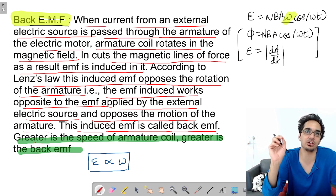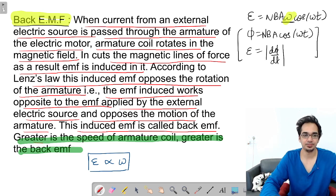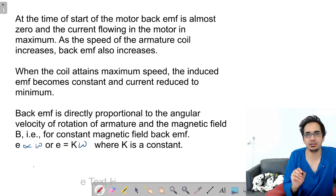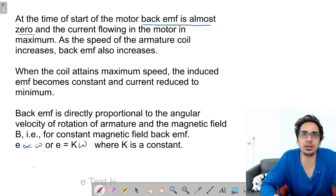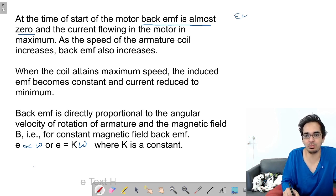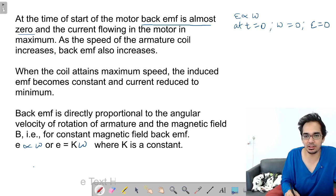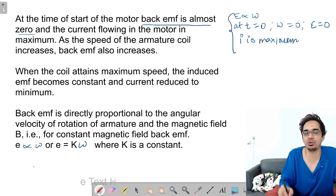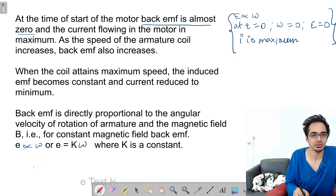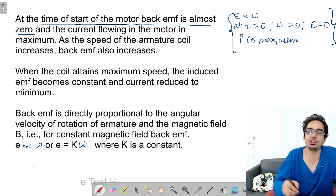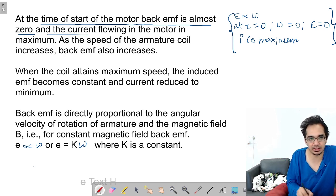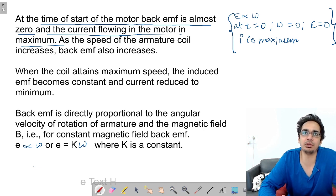At the time of start, back EMF is almost zero. Why? Because ω is zero. E is proportional to ω, so at T=0, ω=0, and back EMF is almost zero. If back EMF is zero, there is no opposition to the EMF — that means current is maximum. At start, current will be maximum because back EMF is not opposing the external EMF.